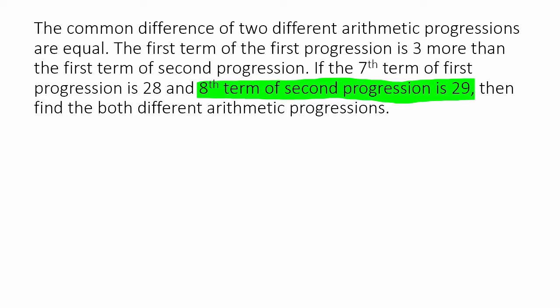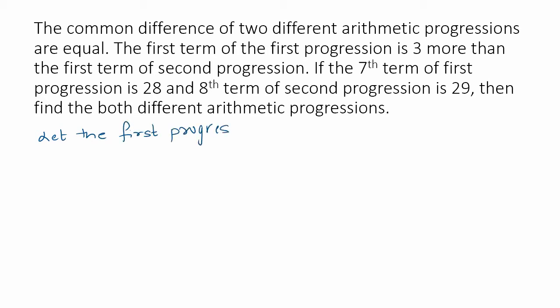Now we have to find the two different progressions. How do we solve this? We will let the first progression be A, A plus D, A plus 2D, and so on — the standard definition of an arithmetic progression.